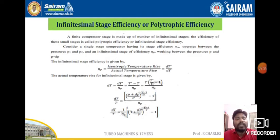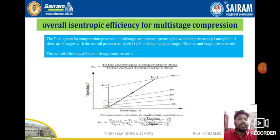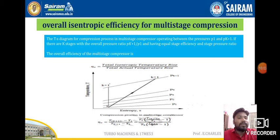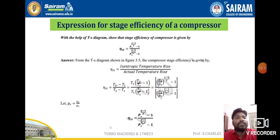This completes the infinitesimal stage or polytropic efficiency derivation for a compressor. For the overall isentropic efficiency of a multi-stage compressor: overall efficiency equals [t times (k+1)-dash minus t1] divided by [t times (k+1) minus t1], which can be rewritten as [t2 times t(k+1)-dash/t1 minus 1] divided by [t2 times t(k+1)/t1 minus 1]. This is the isentropic efficiency for multi-stage compressors. Thank you for watching.